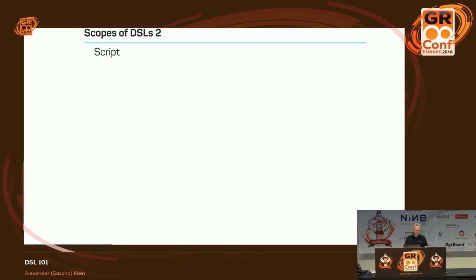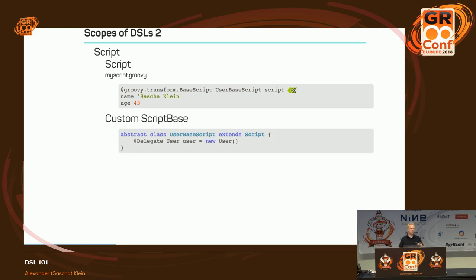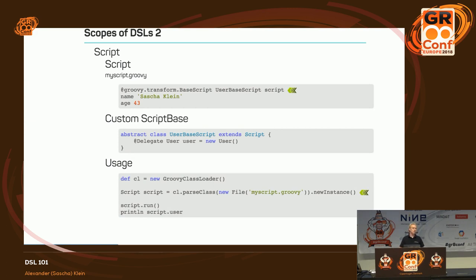The third DSL scope level is scripts — scripts you normally have in an external file, like 'myscript.groovy', where you have name Sasha Klein and age 43. You specify that the base script of this script is a UserBaseScript. UserBaseScript is a file you create — it must extend Script, otherwise the compiler will tell you. Besides that, it just delegates to a user object. You load this class from the class loader, call script.run(), and you get exactly the effect you want.